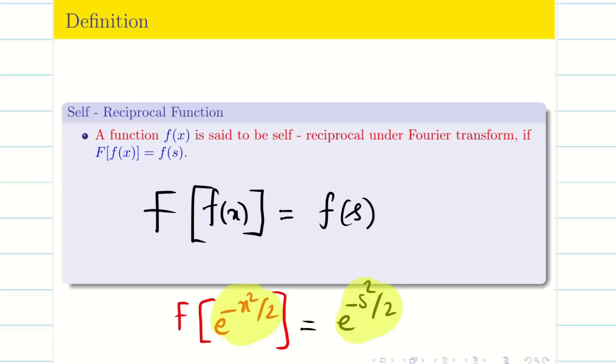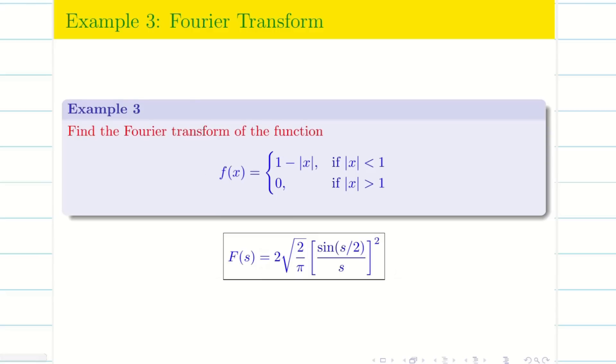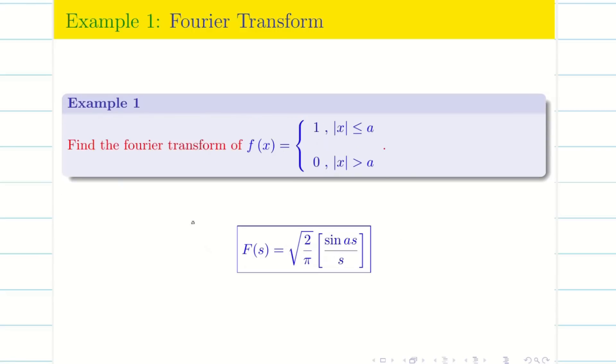Now all the previous examples we have seen - examples 1, 2, 3, 4 - just a quick recap, you see the function f(x) is different and the answer is different. For all these problems, when I take Fourier transform of f(x), my output is not the same.